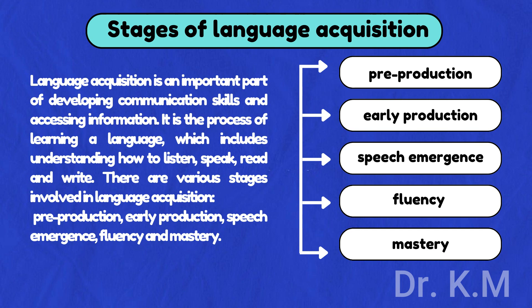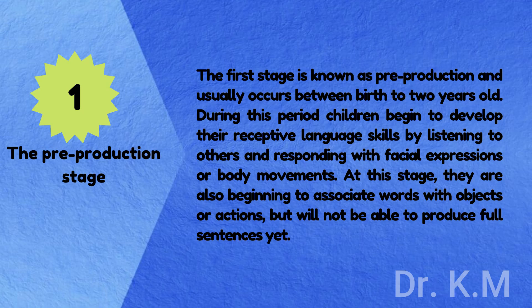Language acquisition is an important part of developing communication skills and accessing information. It is the process of learning a language, which includes understanding how to listen, speak, read, and write. There are various stages involved in language acquisition: pre-production, early production, speech emergence, fluency, and mastery. The first stage, pre-production, usually occurs between birth and 2 years old. During this period, children begin to develop their receptive language skills by listening to others and responding with facial expressions or body movements. They are also beginning to associate words with objects or actions, but will not be able to produce full sentences yet.